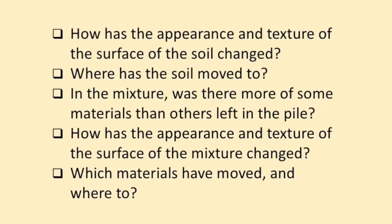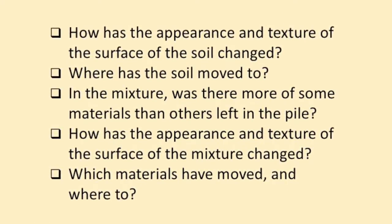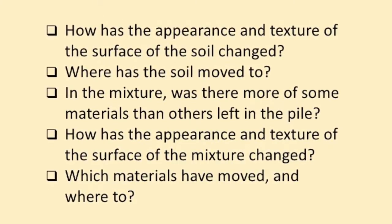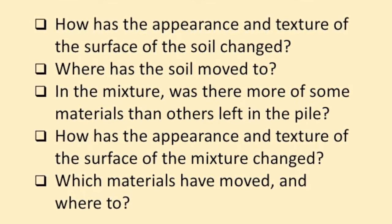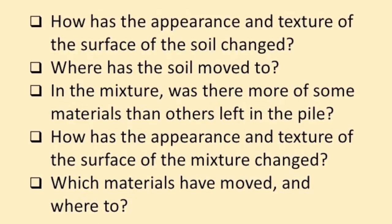Once again, measure and record your observations. Repeat the investigation with the sand, soil, gravel, and clay mixture. The expectation would be that the sand, soil, gravel, and clay mixture would have less erosion and deposition. Closing questions to ask students: how has the appearance and texture of the surface of the soil changed? Where has the soil moved to? In the mixture, was there more material left in the pile? How has the appearance and texture of the surface of the mixture changed? Which materials moved and where to? We're going to take a close-up picture to show you the effect of the precipitation on our dry soil.